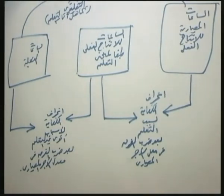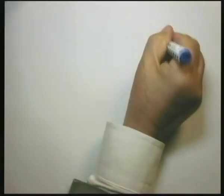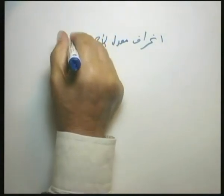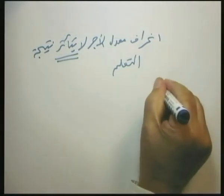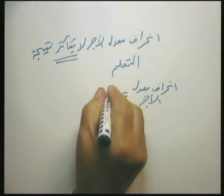من المهم ملاحظة أن انحراف معدل الأجر لا يتأثر نتيجة التعلم، لأن معدل الأجر للساعة لا يتغير سواء أنتجنا كثيراً أو قليلاً. انحراف معدل الأجر = (معدل الأجر المعياري - معدل الأجر الفعلي) × الساعات الفعلية.